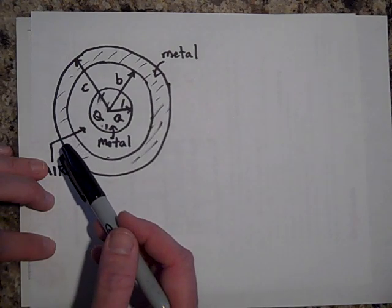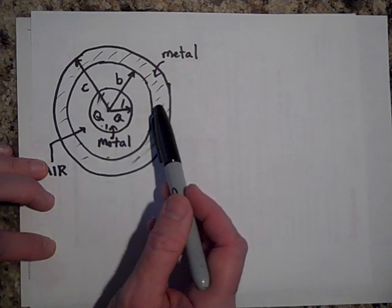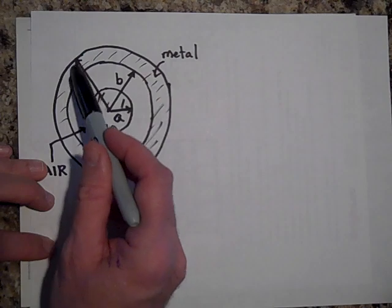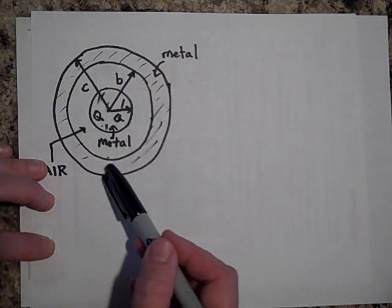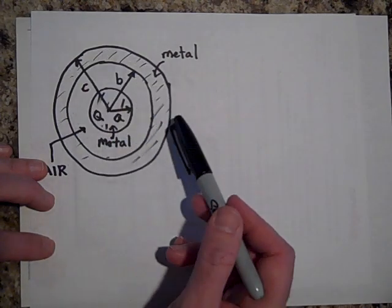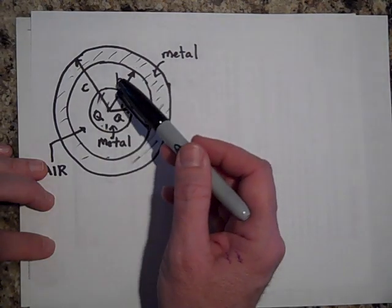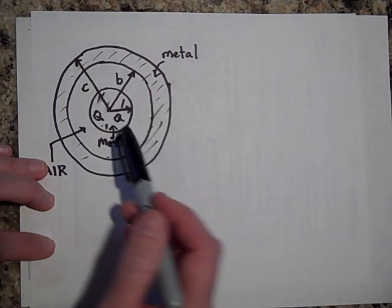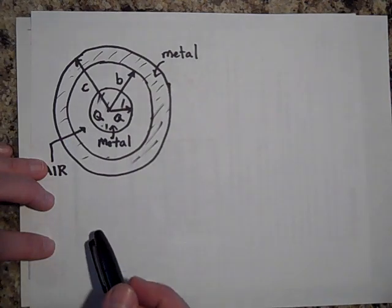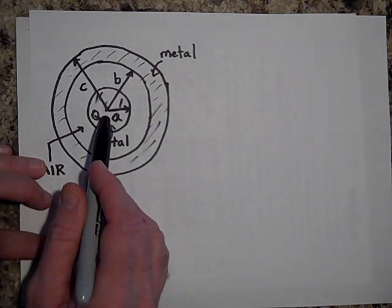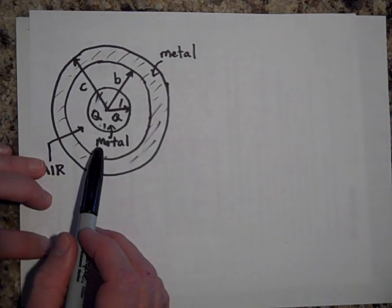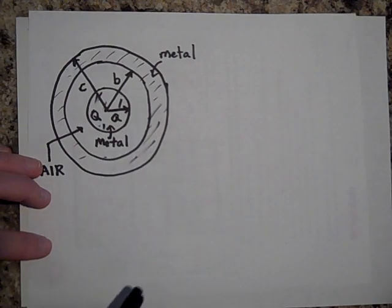Now this is a hollow sphere, but the wall of the sphere has some thickness. So there's the metal. That's the thickness of the outer sphere. Now the inner wall of the outer sphere is B, and the outer wall of the sphere is C. And we have to keep in mind that these are spheres now.